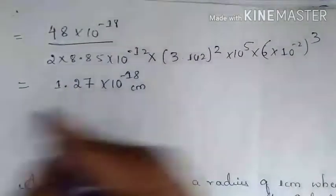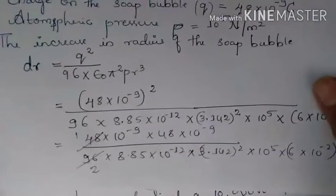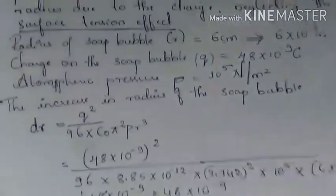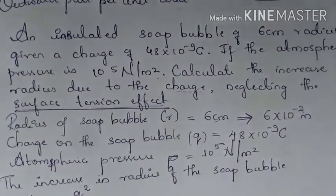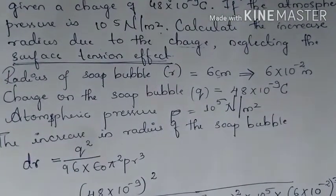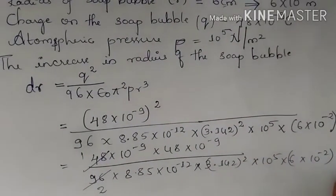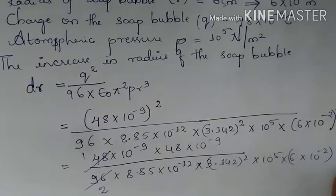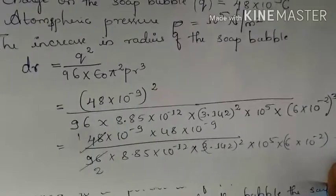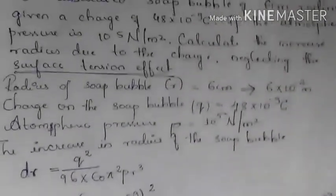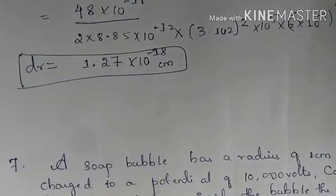The change in radius is dr = 1.27 × 10⁻⁸ centimeters. We directly used the expression dr = Q²/(96ε₀π²PR³), converted all data to SI units, and substituted the values to obtain the increase in radius of the soap bubble due to the charge.